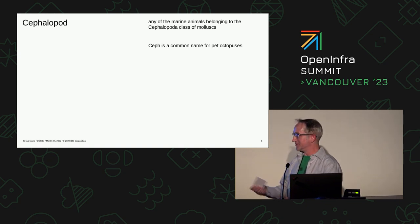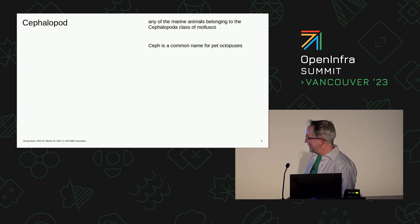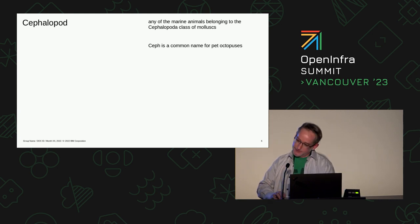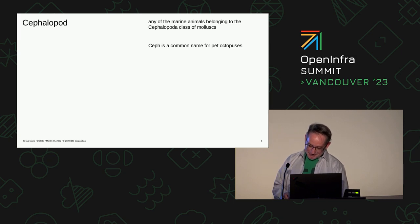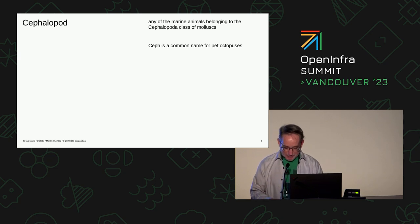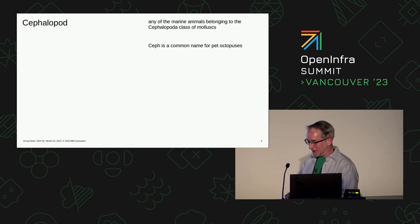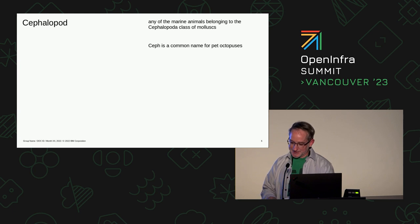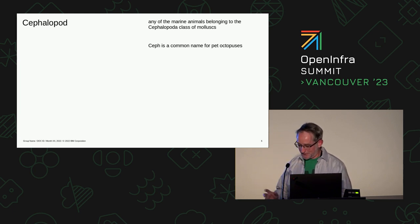Ceph is actually short for cephalopod. A cephalopod is any of the marine animals belonging to the cephalopoda class of mollusks — that includes squids as well as octopi, or octopuses, however you say that. And as well as banana slugs. Banana slugs are, according to the internet, the mascot of the University of California in Santa Cruz. So I guess this was a naming convention to keep everything in the family.